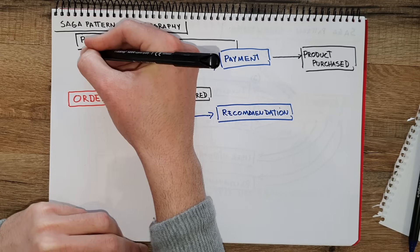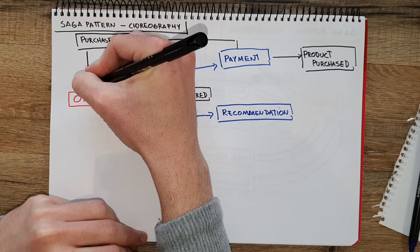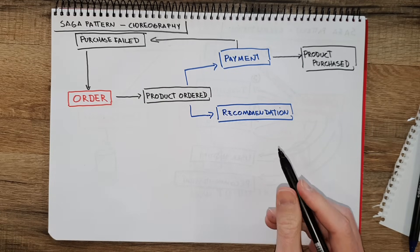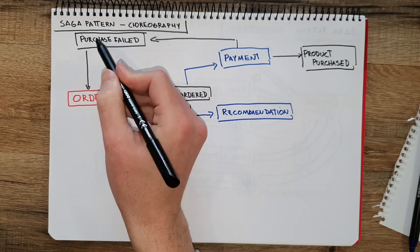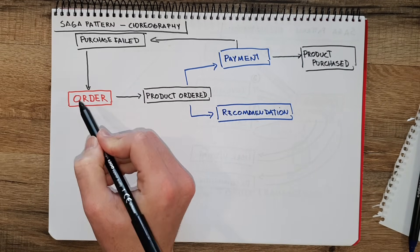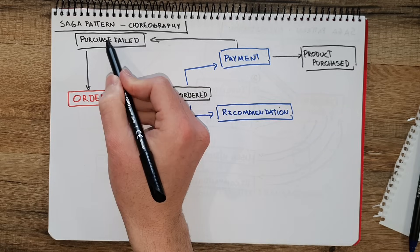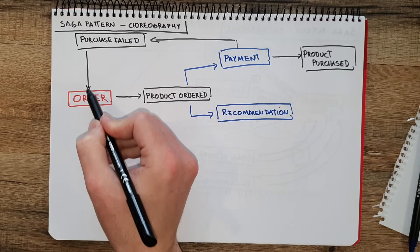When a purchase fails, the order service can have a consumer reading that event and making sure that when a purchase fails, it informs the user correctly about what happened. You can see that nothing else gets executed because if no one else is consuming from this event, then nothing will happen. Only the services subscribed to the 'purchase failed' event are the ones that need to react. If there are no other services subscribed, then nothing else needs to be done.